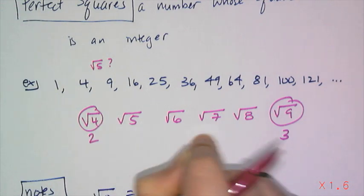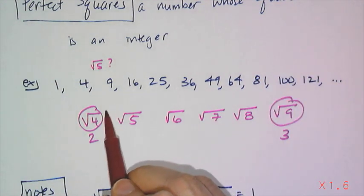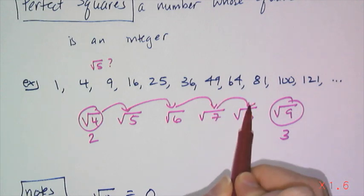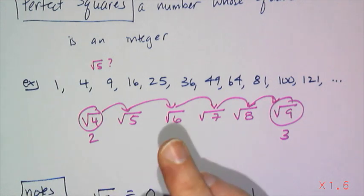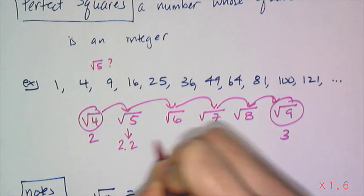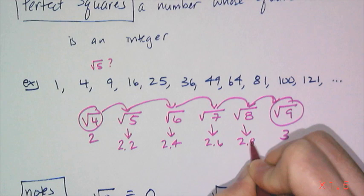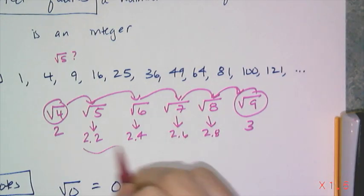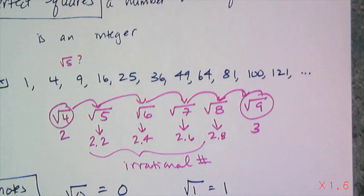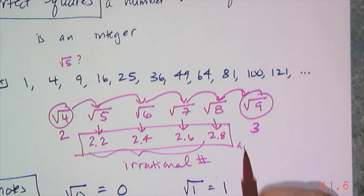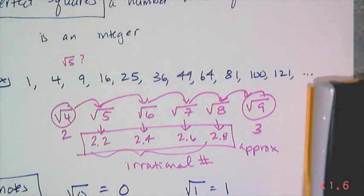So if you want an approximation, you can look at this as 1 jump, 2 jumps, 3 jumps, 4 jumps, 5 jumps. So if you break this interval up into 5, so between 2 and 3 into fifths, this should be about 2.2. This is going to be about 2.4. This is going to be about 2.6. And that's going to be about 2.8. Remember these numbers are irrational numbers, meaning their decimals don't repeat, they don't ever end, they go on forever and ever. And these are just approximations. So if you have to do a quick calculation without a calculator just to see if an answer makes sense, you can kind of use those values.